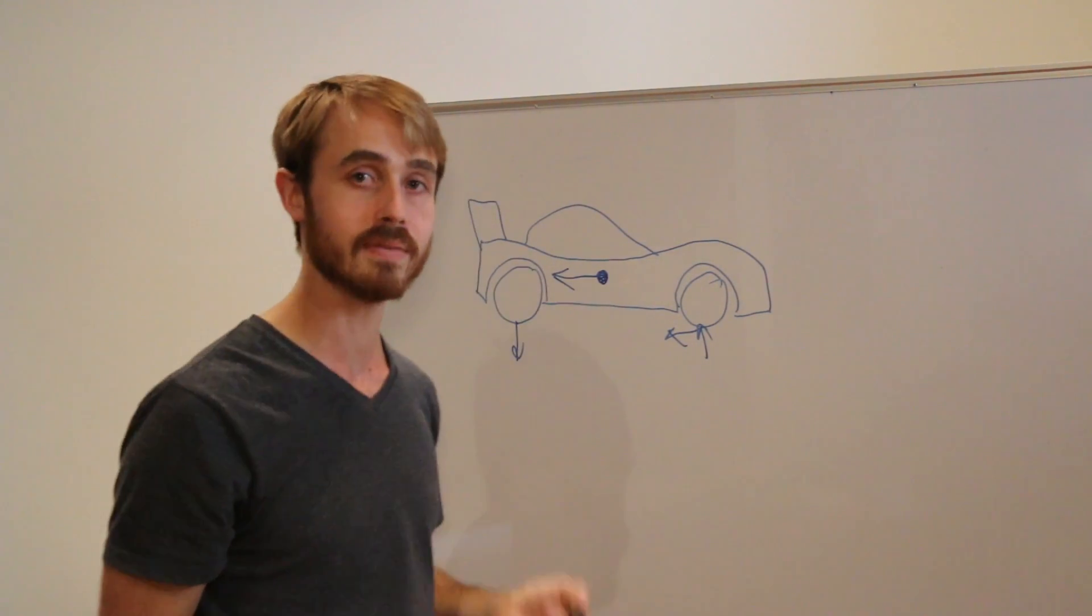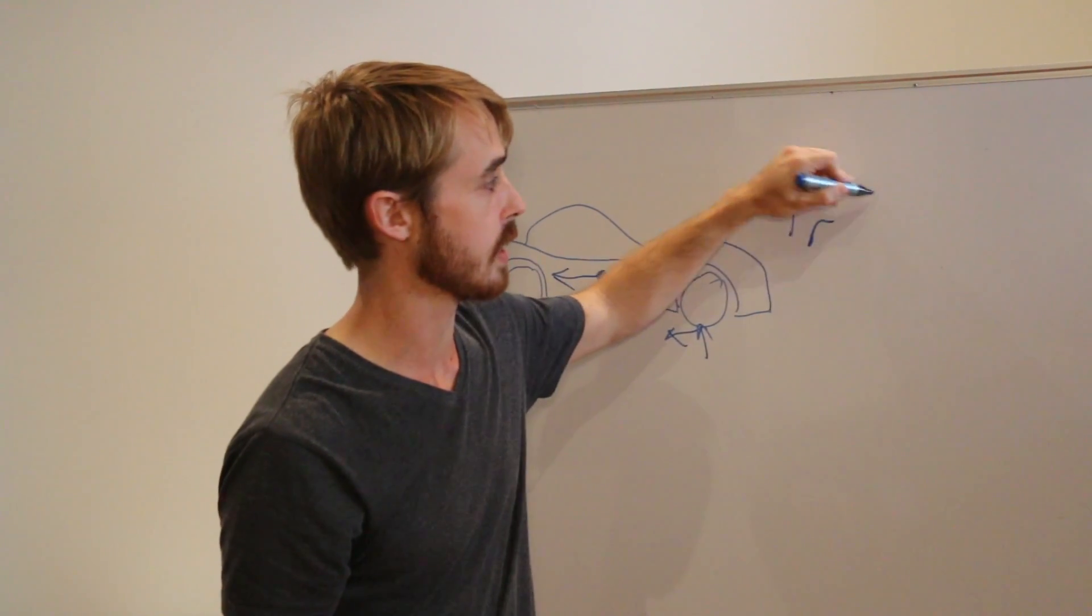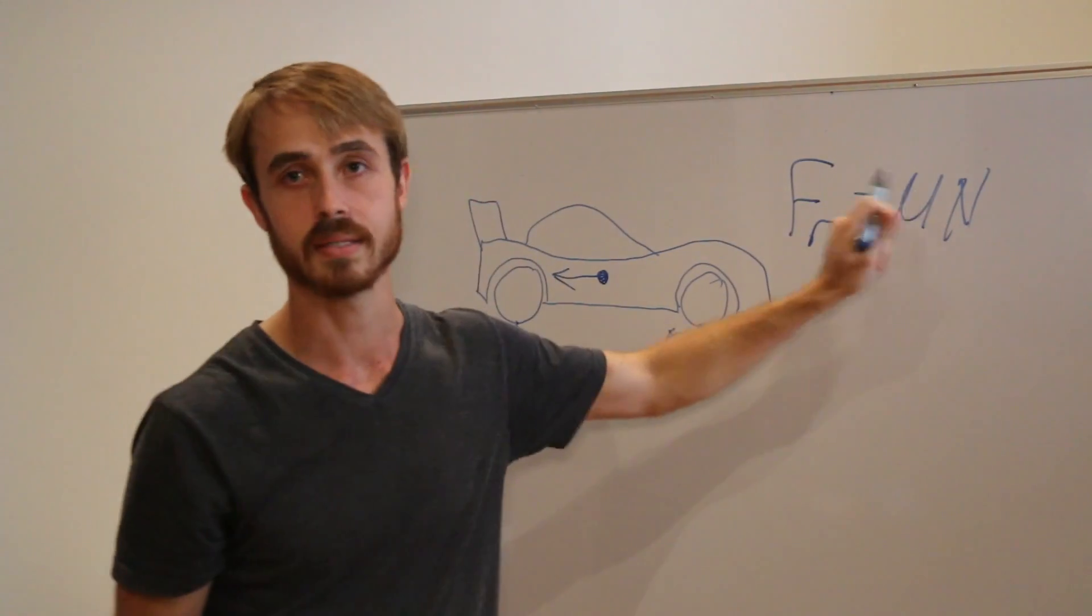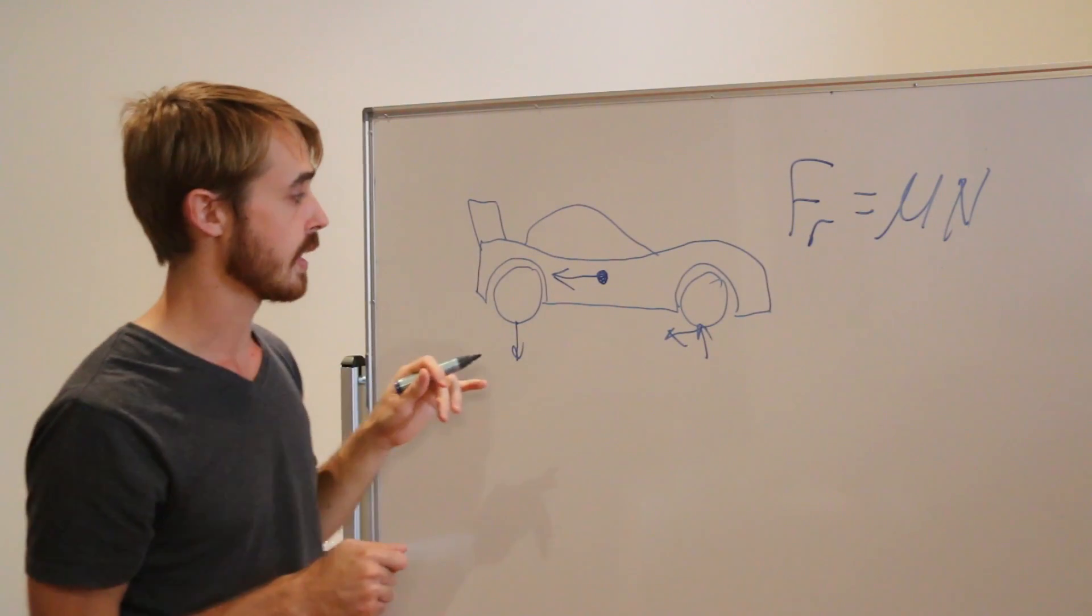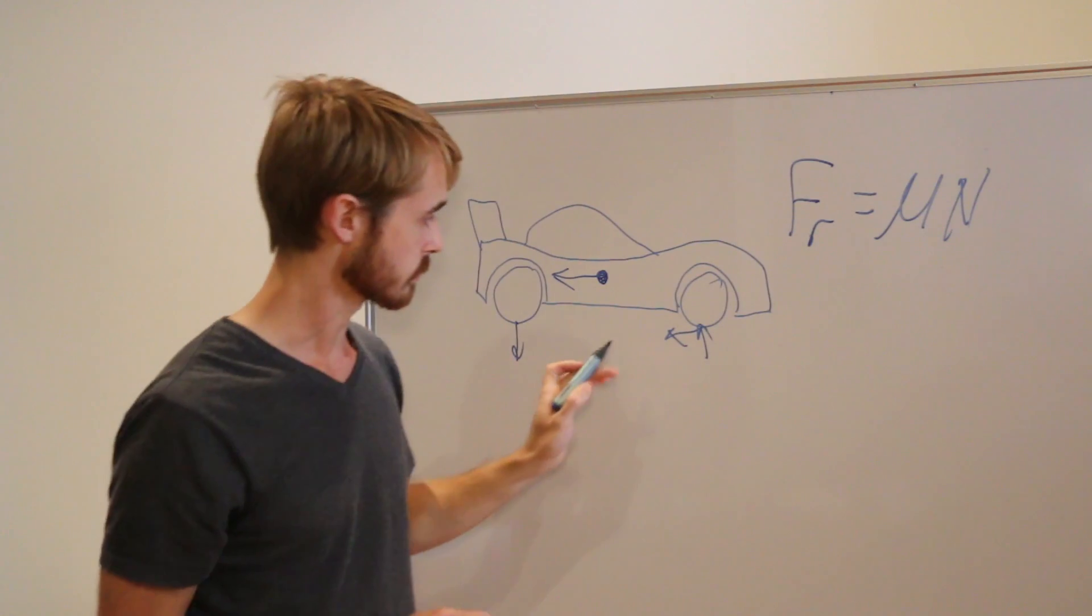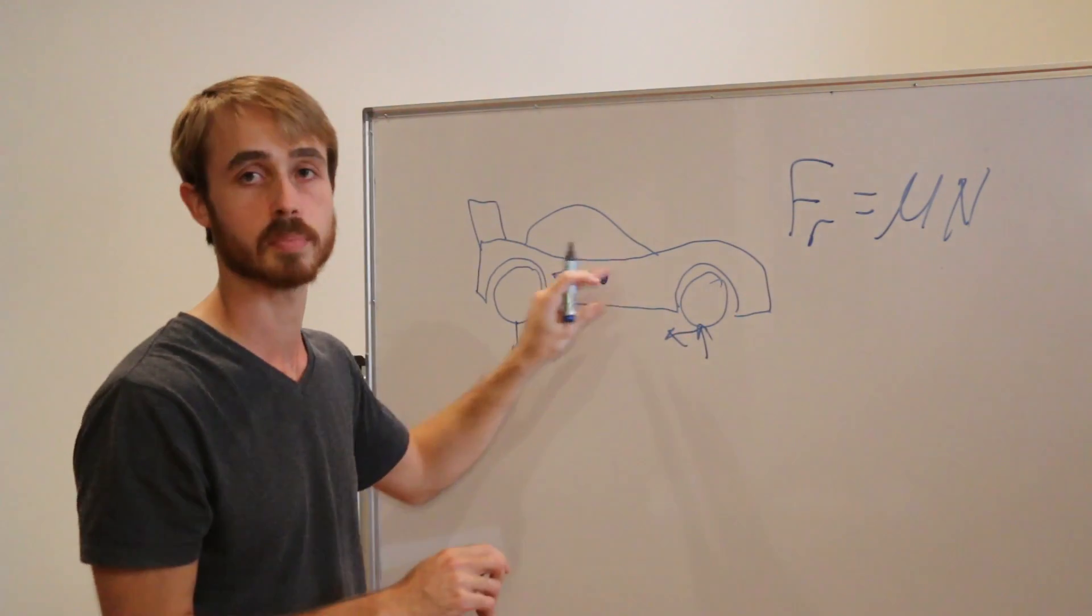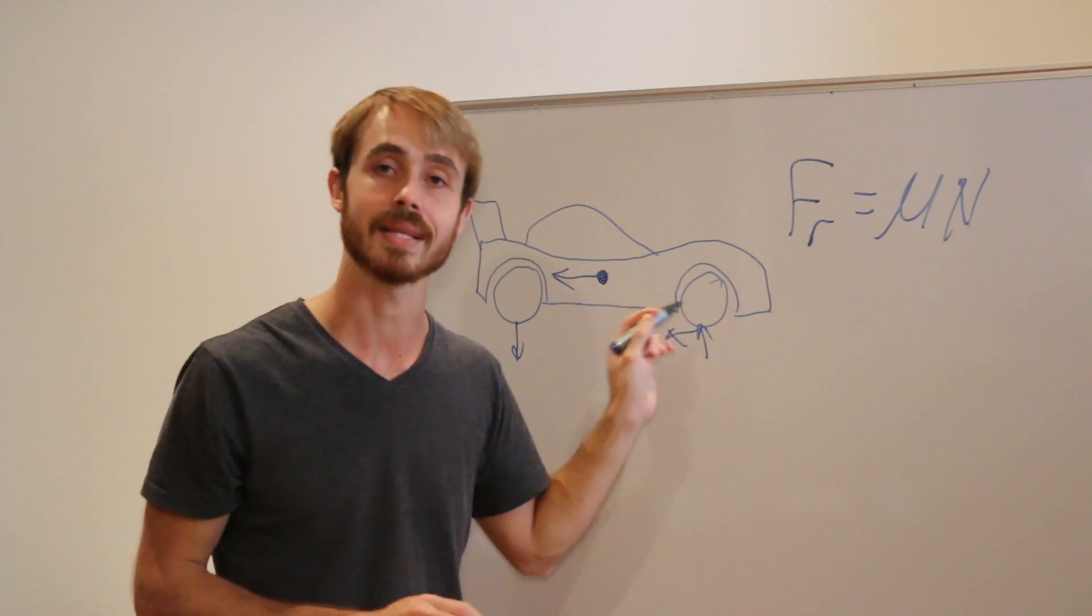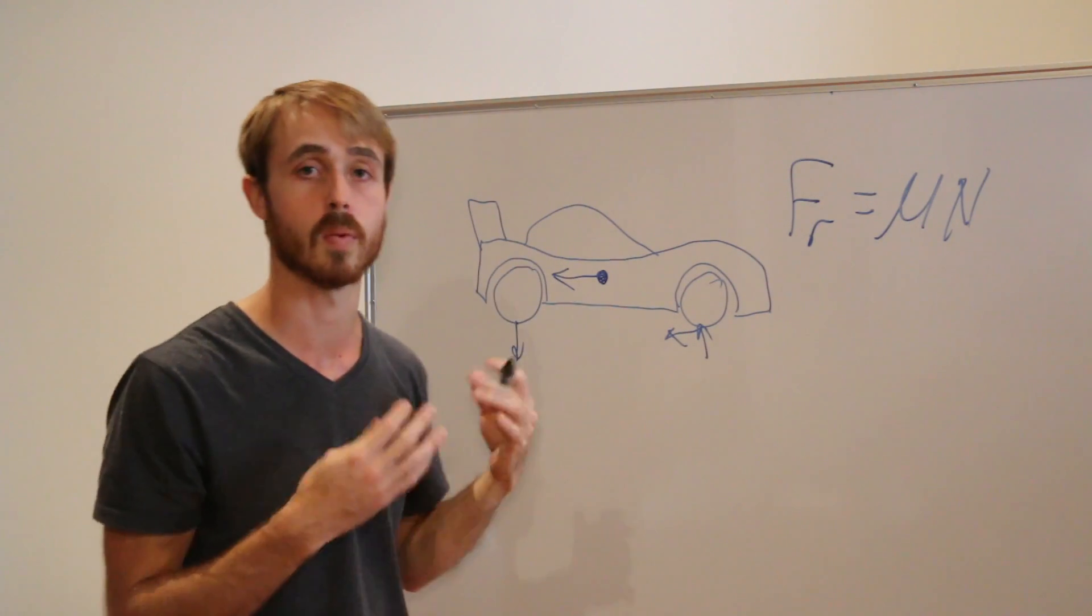As you may know from some of my previous videos, the grip can be approximated as Fr equals mu N, this N being the normal force on the tire. Obviously, there's variations in mu, but for the sake of this, let's keep it simple. We can see that as the normal force is being decreased by this weight transfer to the rear, we're going to have proportionally less relative grip on our front wheels than our rear wheels than what we had before.